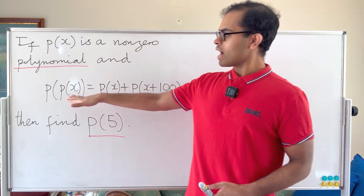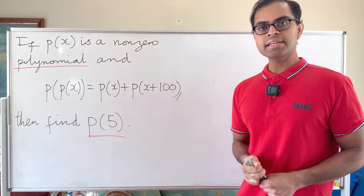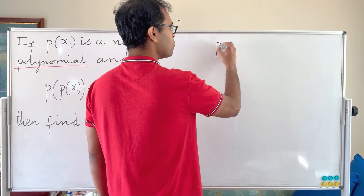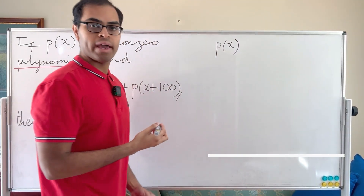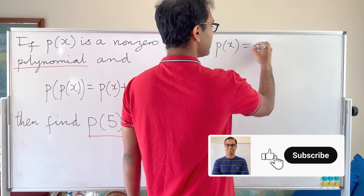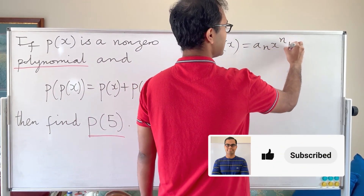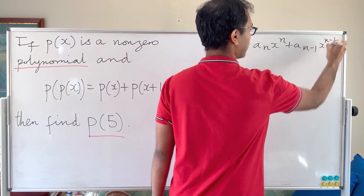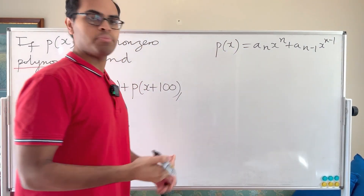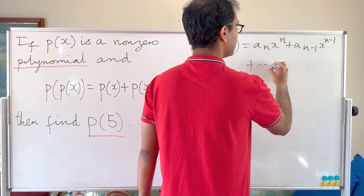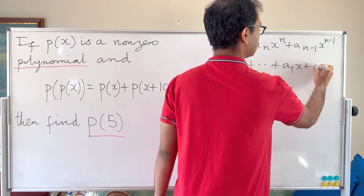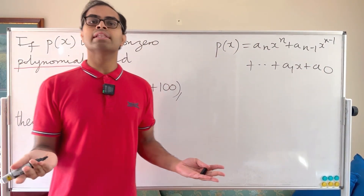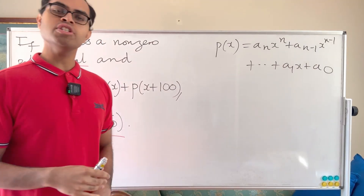Let's try to understand the left-hand side and the right-hand side and write out what we know. In math, even if you're stuck, just write out what you know and that goes a long way. So p(x) equals a_n x^n + a_{n-1} x^{n-1} + ... + a_1 x + a_0. The coefficients a_n through a_0 — let's assume they're real numbers.